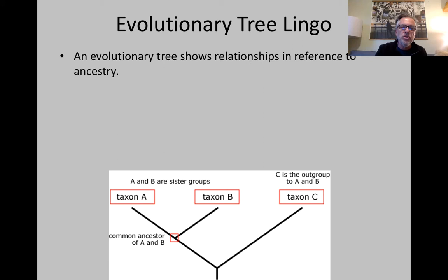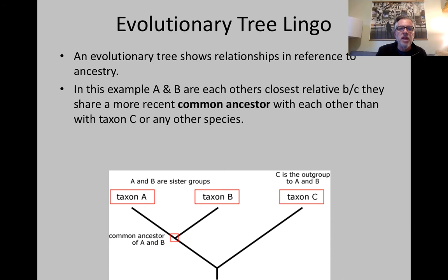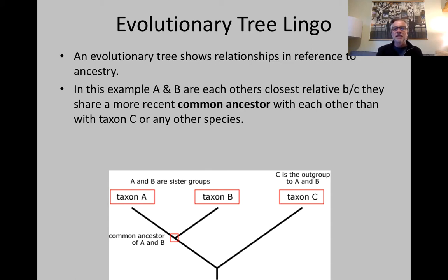Now, first we want to get some language to understand evolutionary trees. The evolutionary tree shows relationships in reference to ancestry. In this example, we have three groups: A, B, and C. The reason they're called taxon is because that can refer to any taxonomic group or species. So taxon A could be blue jay, taxon B could be robin, and taxon C could be wren. Or it could refer to families of birds — taxon A could be warblers, taxon B could be vireos, and taxon C could be woodpeckers.